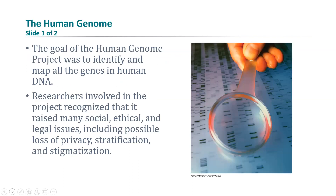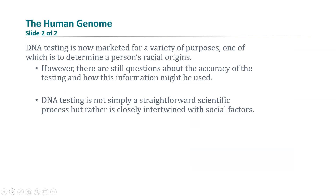Let's switch to biotechnology and the human genome. The goal of the Human Genome Project was to identify and map all the genes in human DNA. Researchers involved in that project recognized that understanding the genetic makeup of the human species raised many social, ethical, and legal issues. Among the social issues raised are concerns about privacy, stratification, and stigmatization. DNA testing is now marketed for a variety of purposes, one of which is to determine a person's racial origins. However, there are still questions about the accuracy of the testing and how this information might be used. DNA testing is not simply a straightforward scientific process but one that is closely intertwined with social factors.